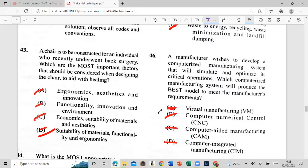43: a chair is to be constructed for an individual who recently underwent back surgery. Which are the most important factors that should be considered when designing the chair to aid with healing? A: ergonomics, aesthetics, and innovation. B: functionality, innovation, and environment. C: economics, suitability of material, and aesthetics. Or is it D: suitability of material, functionality, and ergonomics? And that's D.